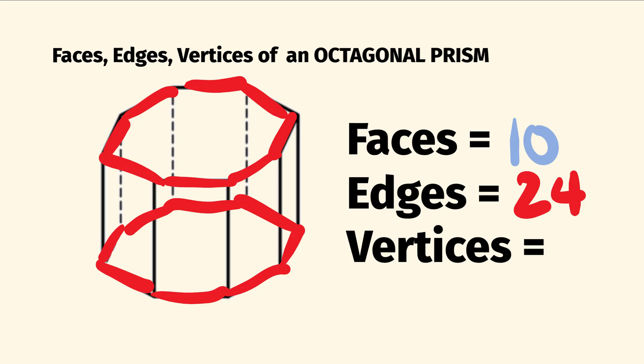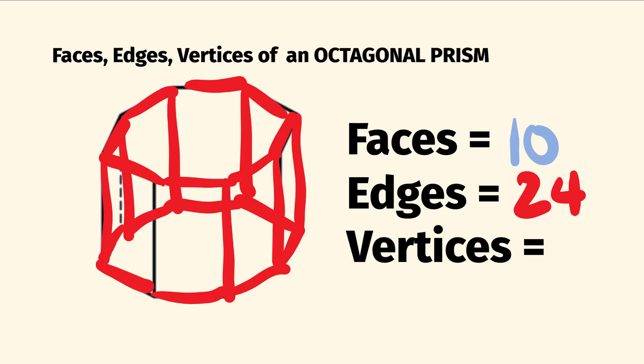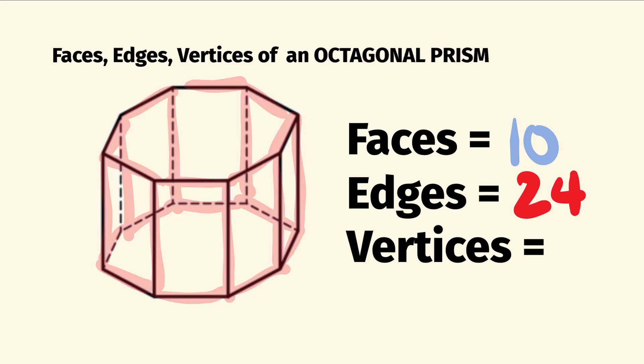And joining those two octagons together, those two parts together, we have another 8 edges: 1, 2, 3, 4, 5, 6, 7, 8. So all together, 8 plus 8 plus 8, that's 24 edges.